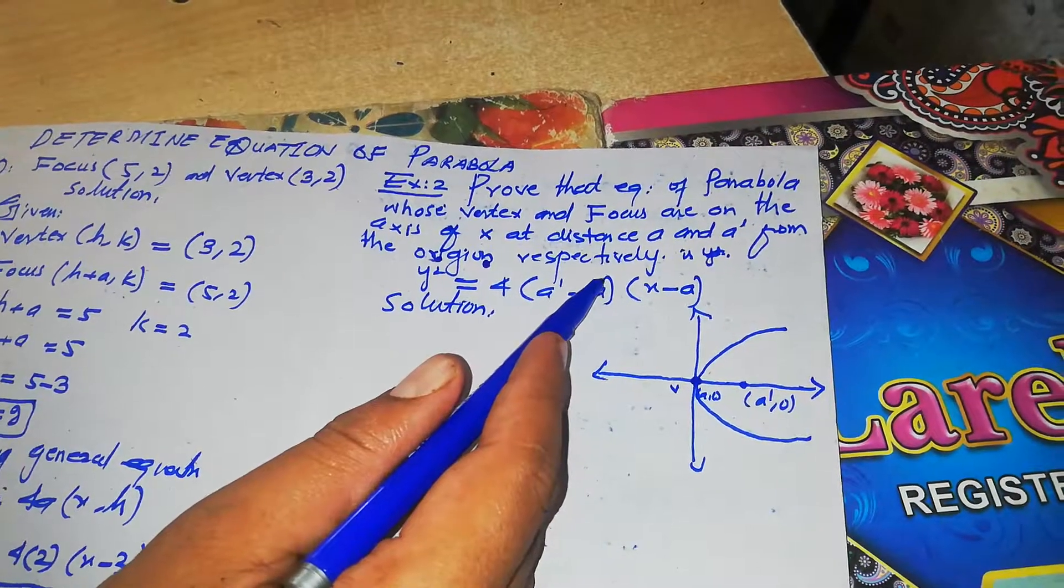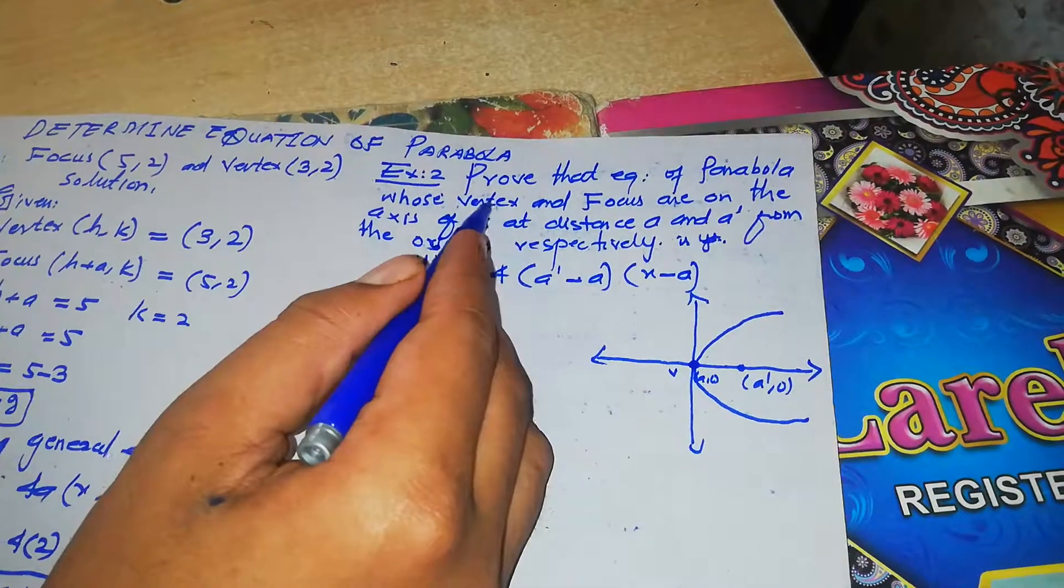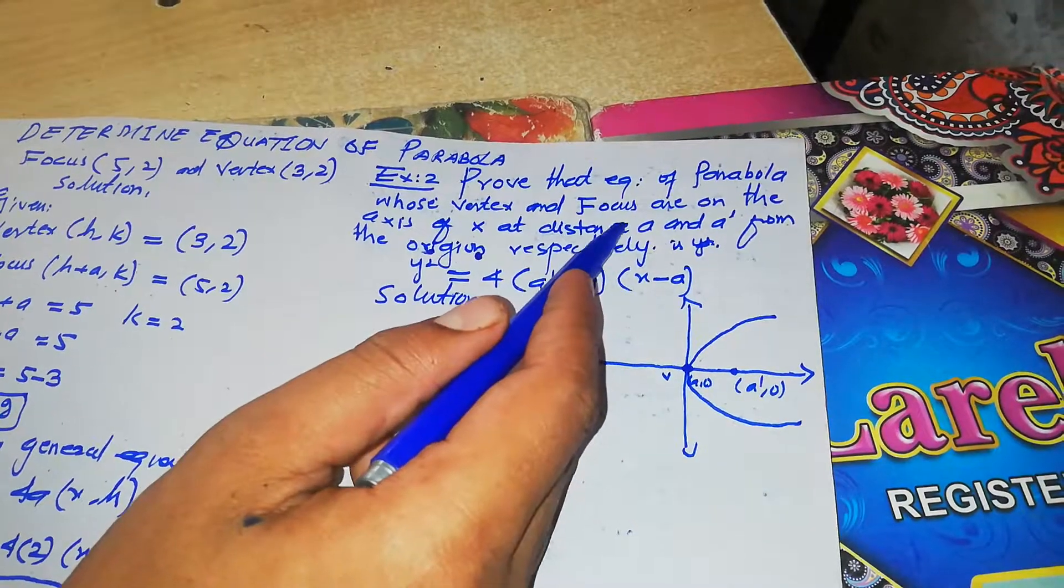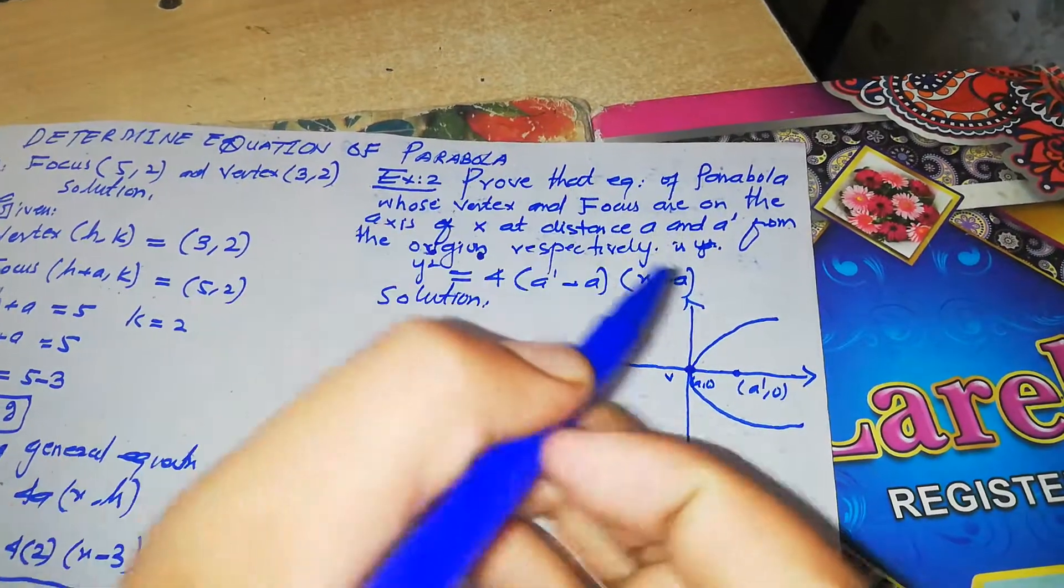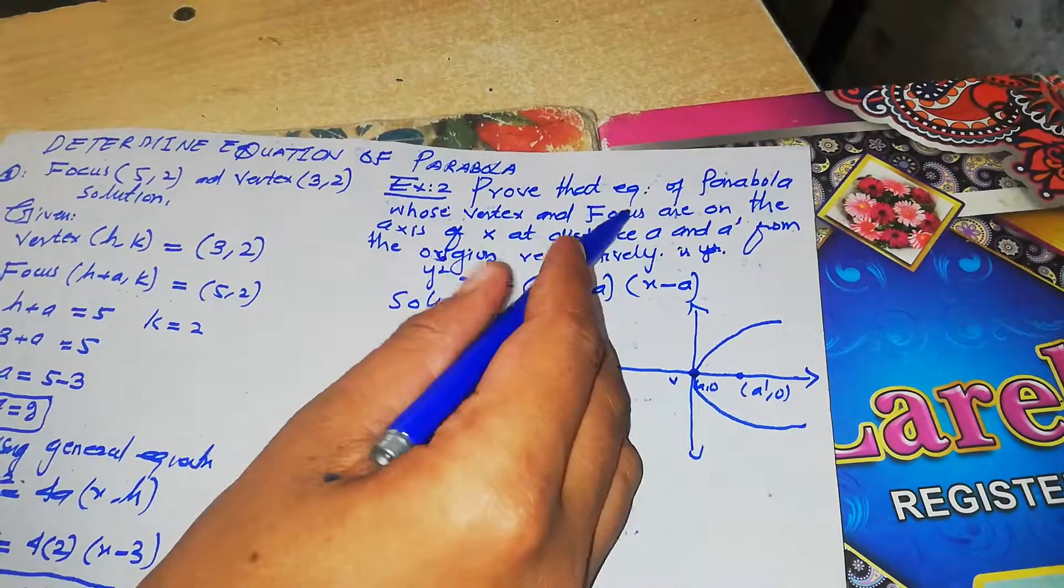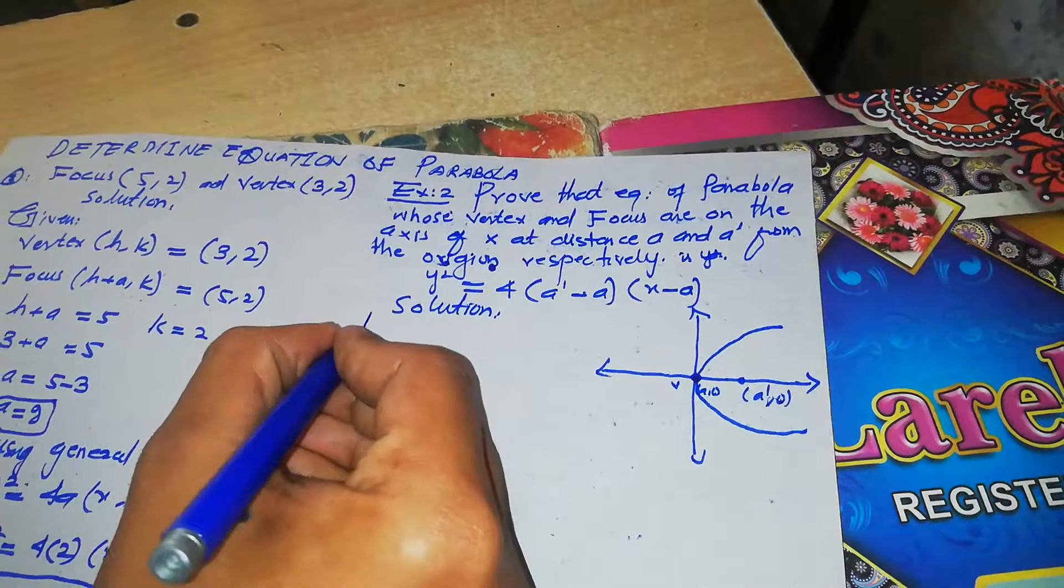Here we have given that the vertex and focus are on the x-axis at a distance, means that the vertex is at distance a, which is (a, 0), and the focus is at (a prime, 0).